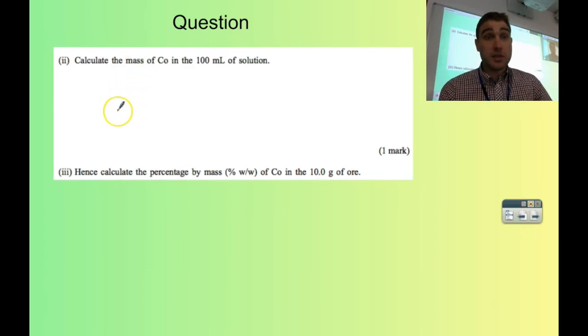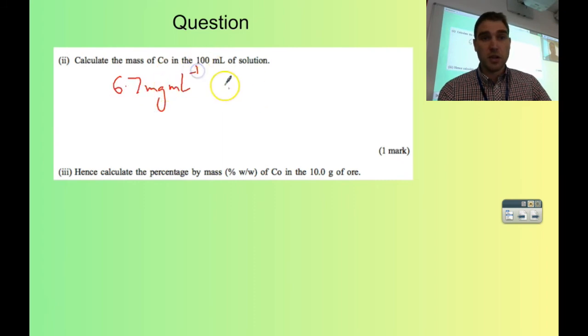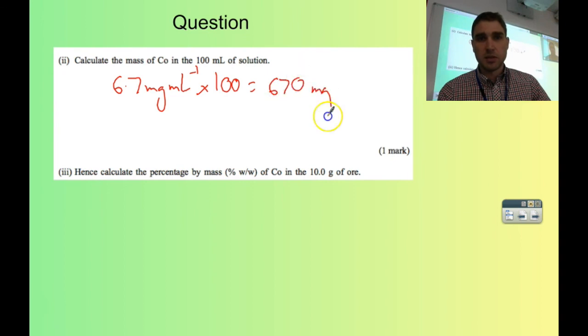The next part of the question says, calculate the mass of cobalt in 100 ml of solution. We had 6.7 milligrams per milliliter. We've got 100 ml, so we're going to times that by 100. 6.7 times 100 is 670 milligrams. We times by 100 ml, so it cancels out. We get 670 milligrams.